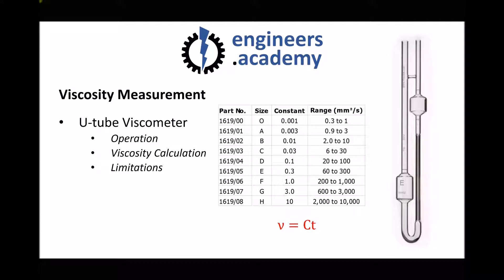There are quite a few limitations with a U-tube viscometer. First, each viscometer is only designed to measure relatively narrow ranges of kinematic viscosities, because low viscosity fluids travel through a narrow capillary far more quickly than high viscosity fluids. These viscometers are also not particularly portable — they're made of glass and quite fragile, which is a consideration if measuring viscosities on site. Cleaning is another important consideration; they typically need to be cleaned with a solution and thoroughly dried before testing another fluid. So whilst they give very accurate readings, there are a number of limitations.